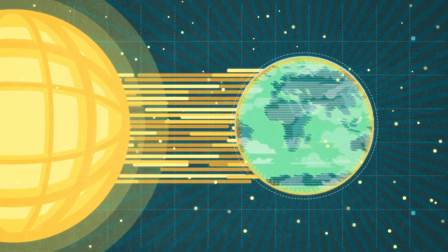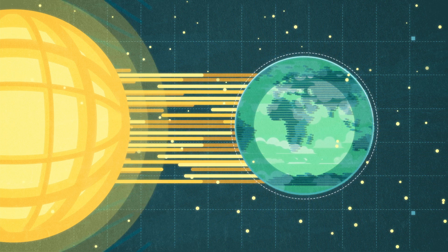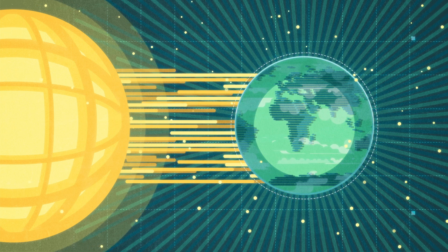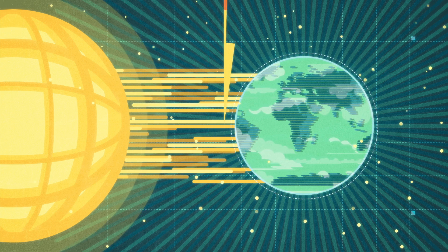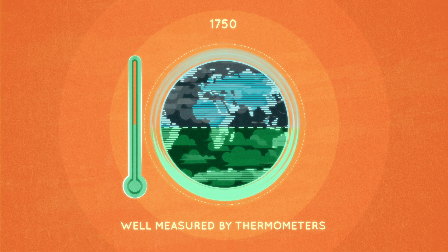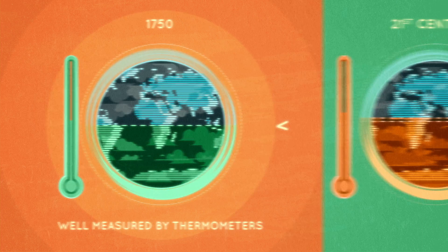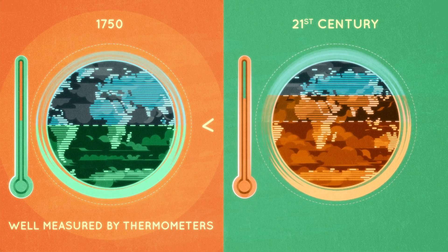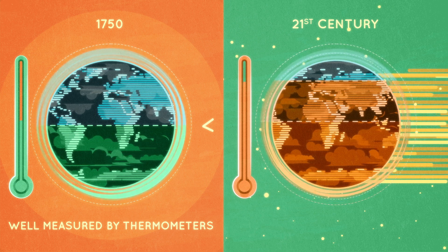To correct the imbalance, Earth warms up or cools down. We can determine Earth's climate sensitivity from the experiment that we've already performed in the industrial age since 1750, and then use this number to determine how much more it will warm for various projected radiative forcings in the 21st century.